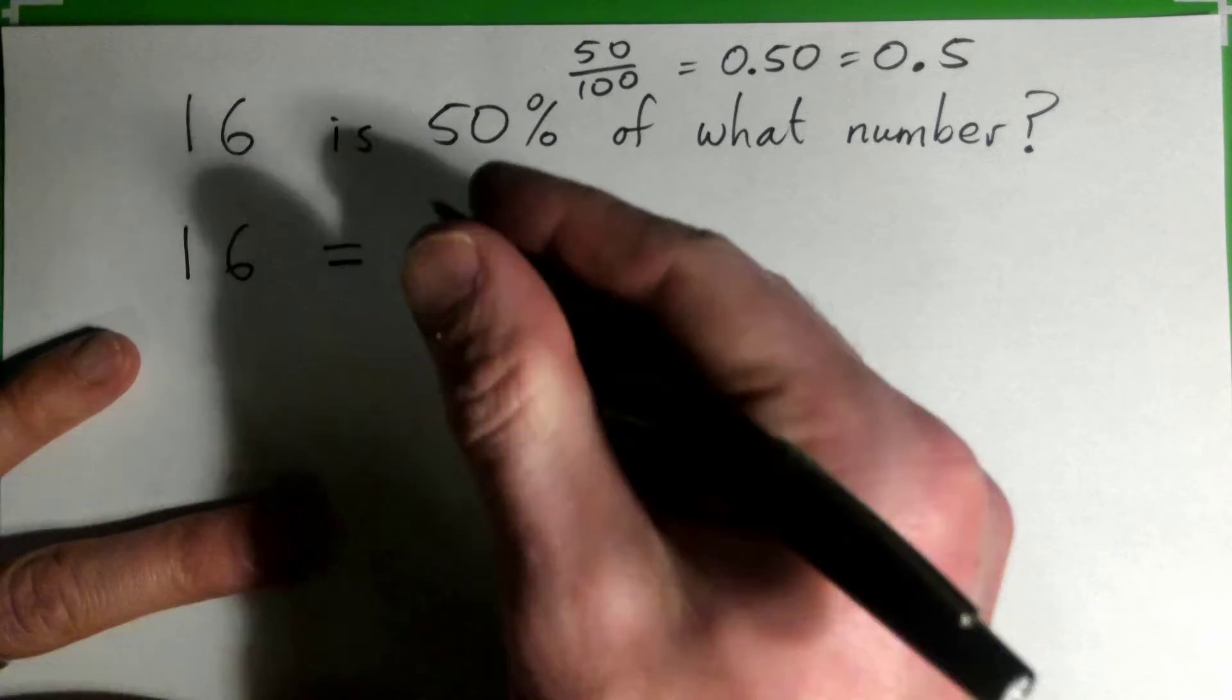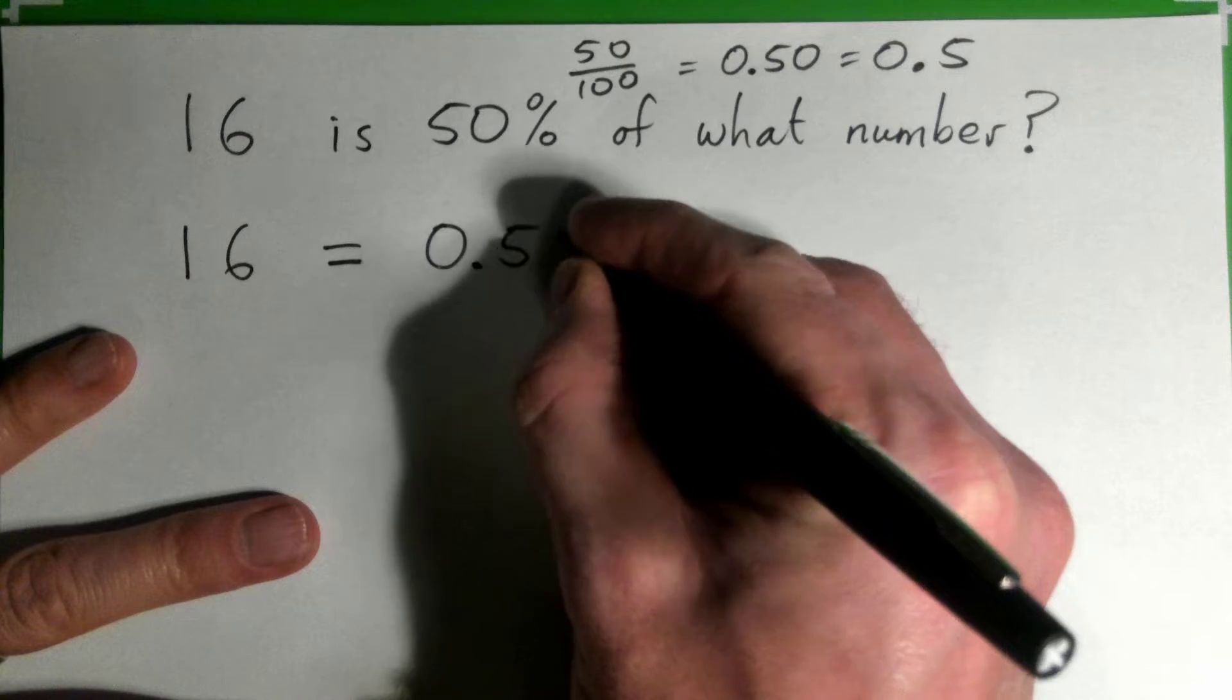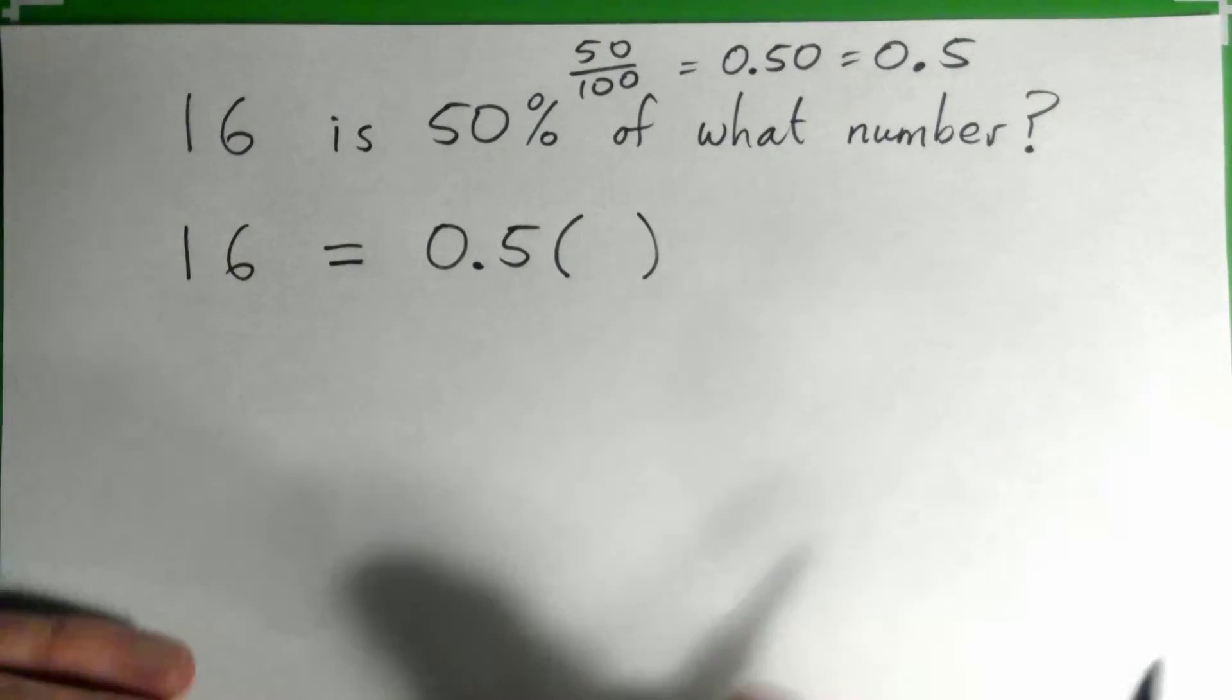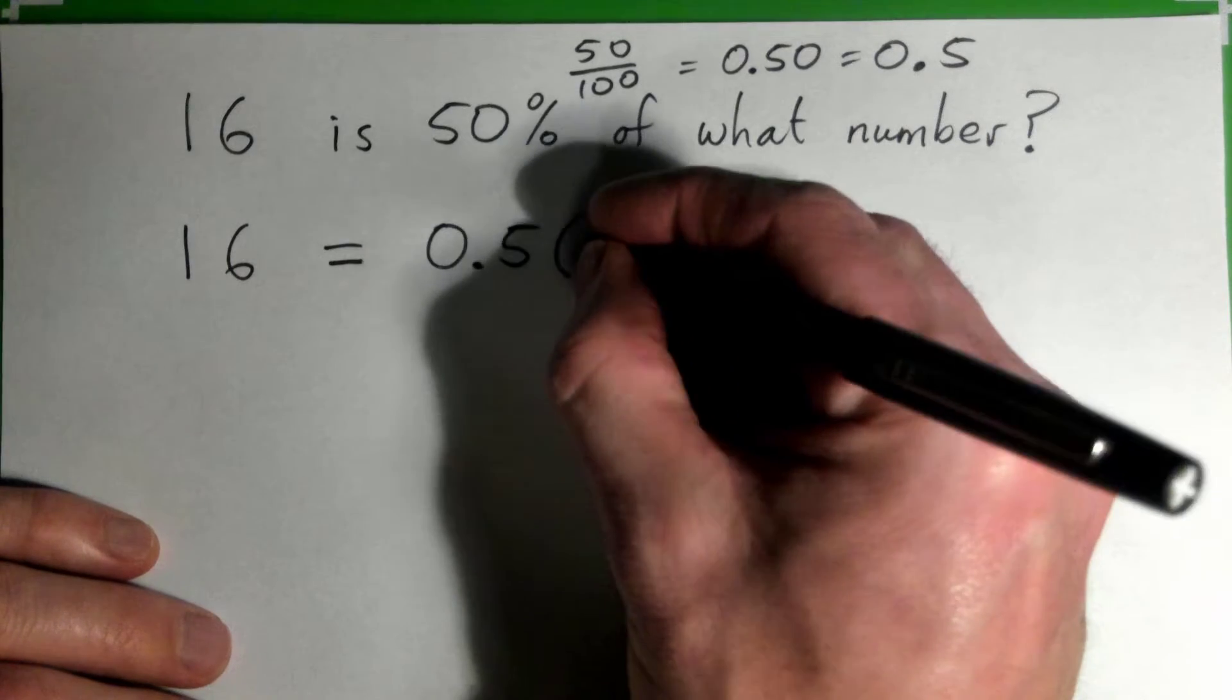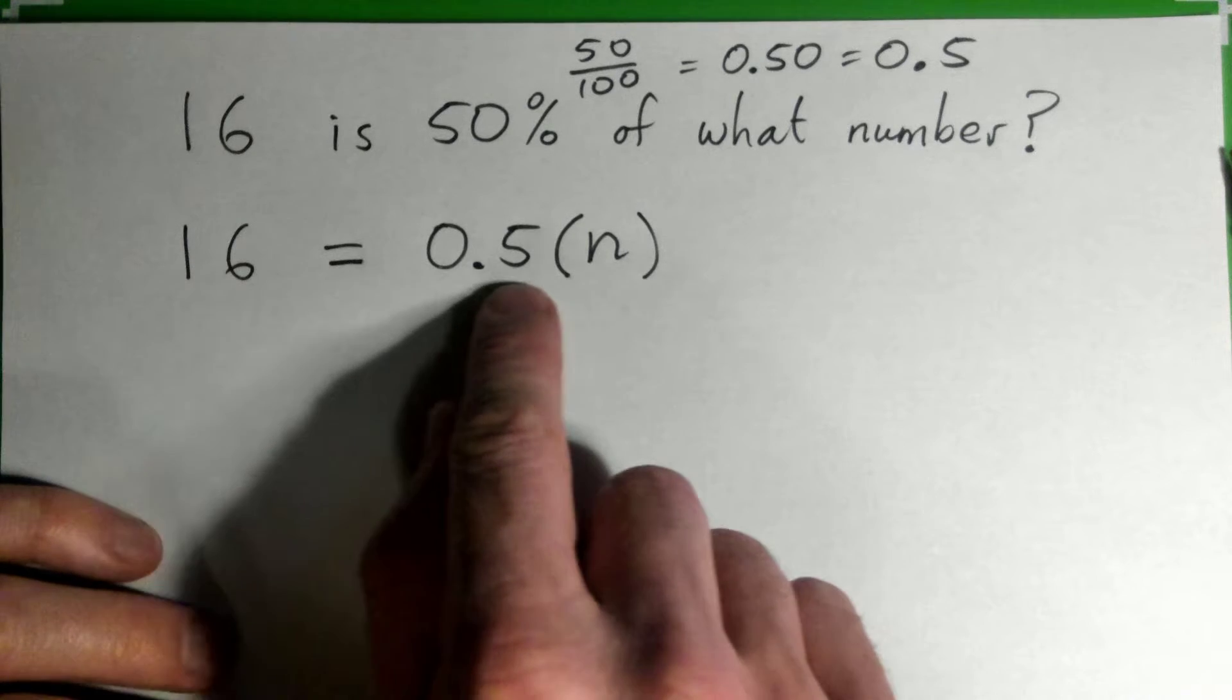Of in math means multiply, of means multiply. And what number we can put any letter there, x, a, b, c, and let's do n for fun. So 16 equals 0.5 times some number n.